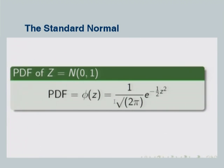For the normal random variable we had the general equation, and we get the standard normal by setting sigma equal to 1 and mu equal to 0. For the PDF we use the Greek letter phi — the small phi is typical notation for the standard normal random variable.